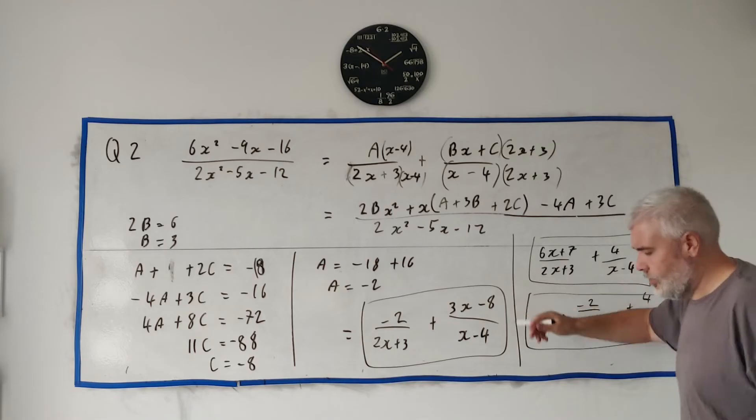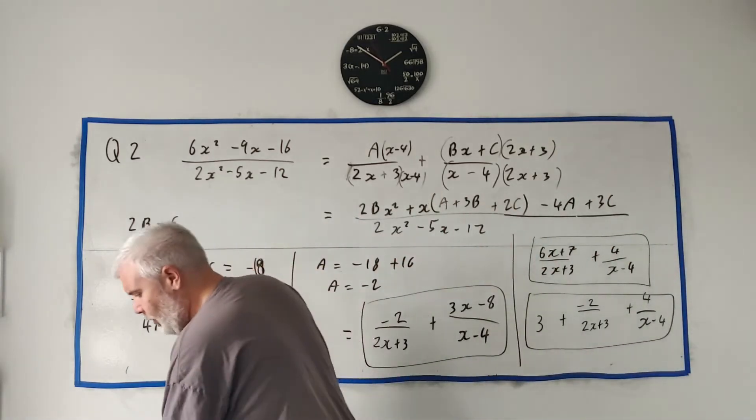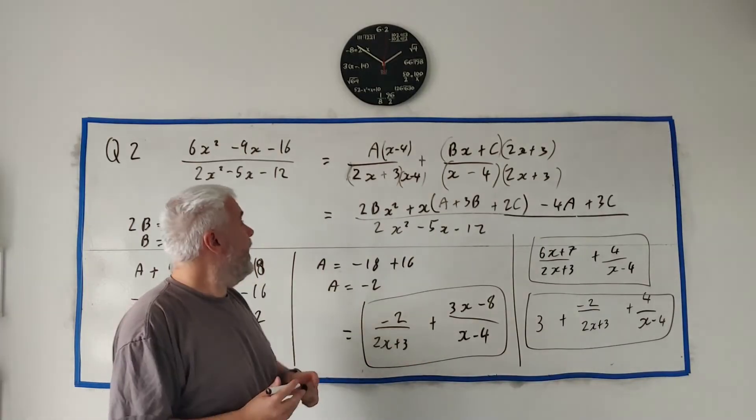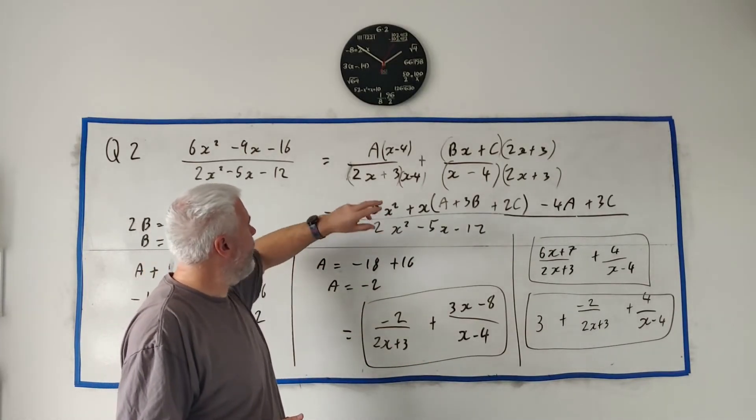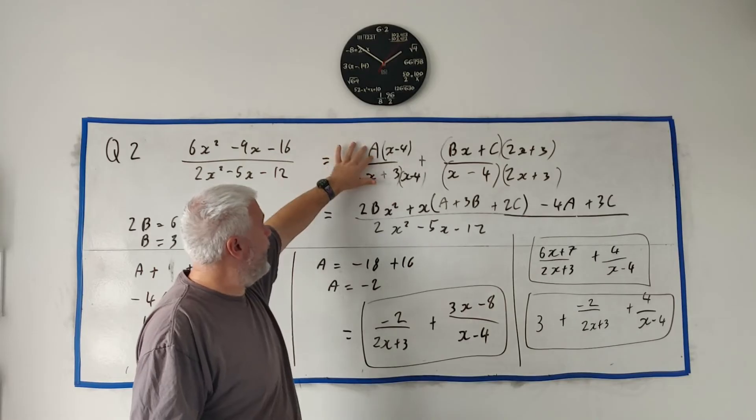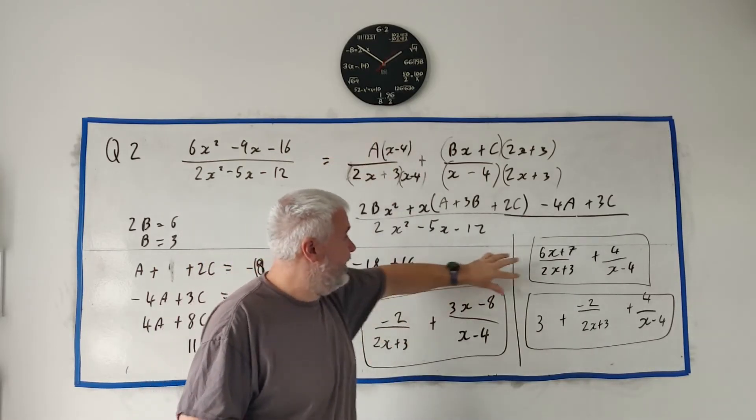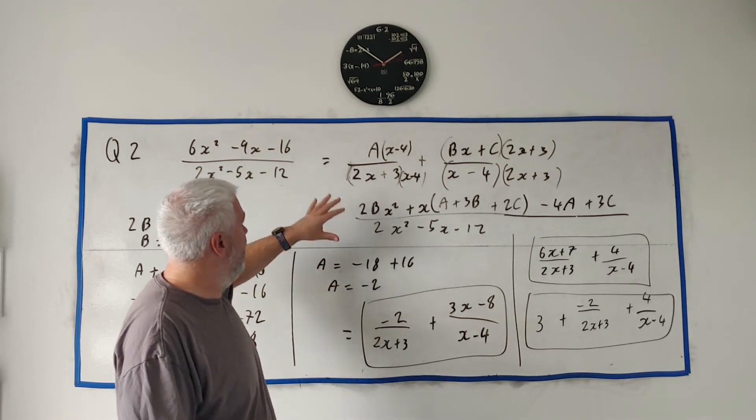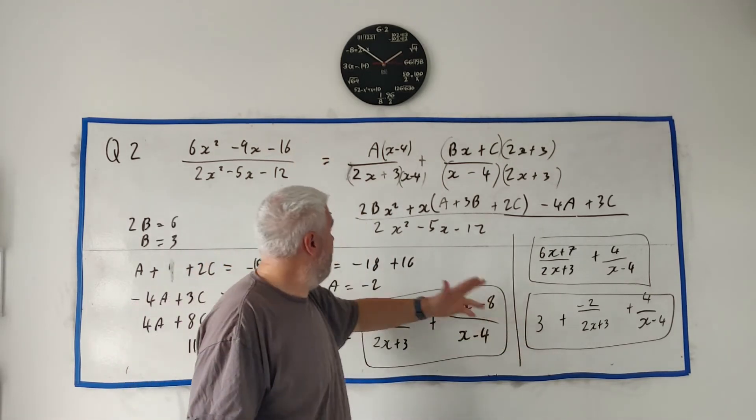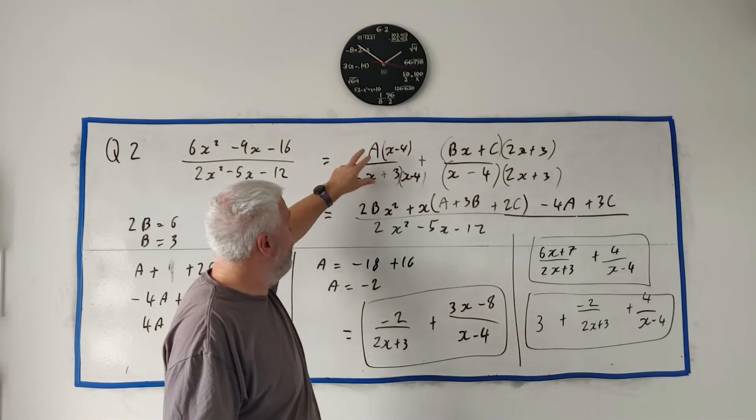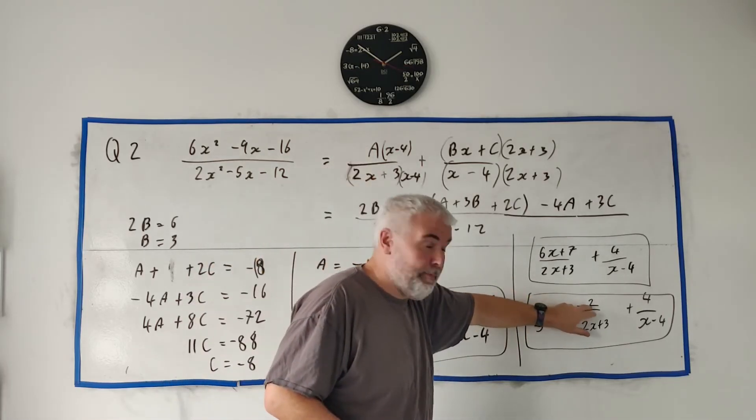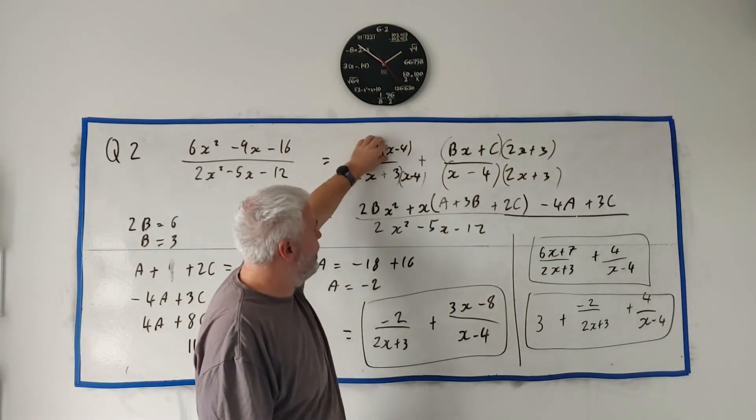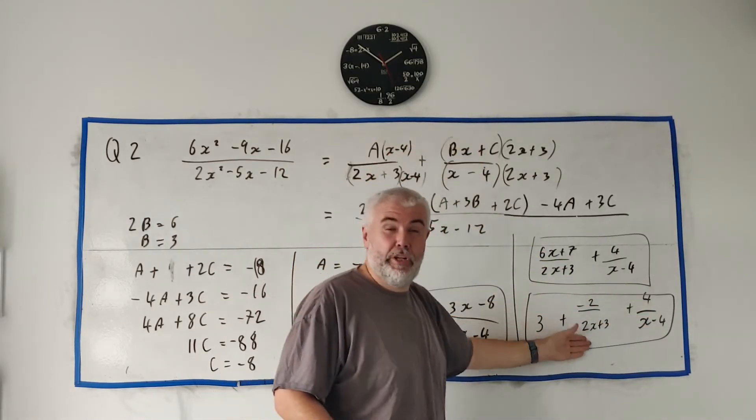And one other answer, which I'll talk about a little more, I'll clean off this and talk about a little more. Another answer we could get is 3 plus minus 2 over 2X plus 3 plus 4 over X minus 4. All three of these, I think there's only three answers, all three of these answers are perfectly correct. So if you did it the way I did it, you would have got this. If instead you put the X part on the left, you would have got this one here.